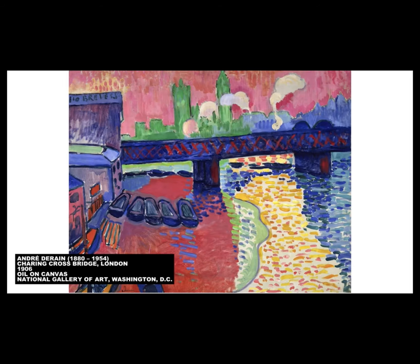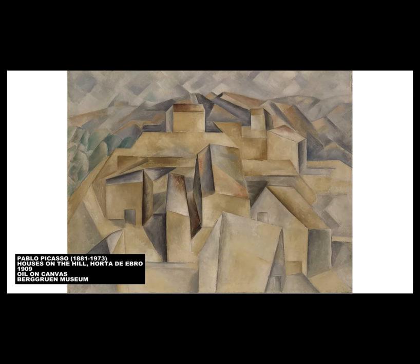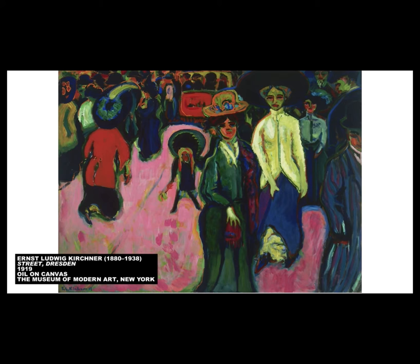By the 20th century, Matisse and André Derain were painting familiar things in unfamiliar ways — using such intense colors and broad brushstrokes that a critic dubbed them the Fauves, or wild beasts. Picasso and Georges Braque pioneered the Cubist style, breaking subject matter into geometric shapes, fragmenting the picture plane, and showing multiple sides of a thing at once. The Italian Futurists wanted to reflect the speed and overstimulation of modern urban life, also collapsing space and time into one image.